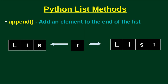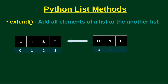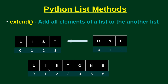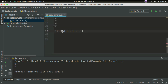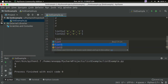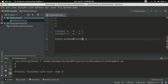If we want to add a list to another list, we will use the extend function. For example, list1.extend(list2) will add all elements of list2 into list1.